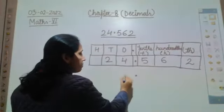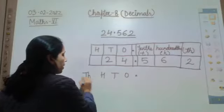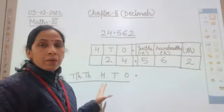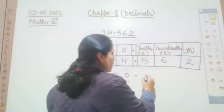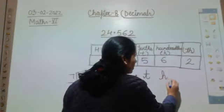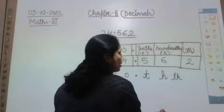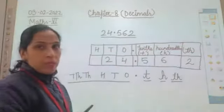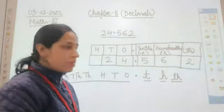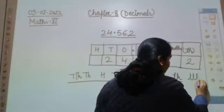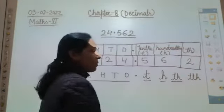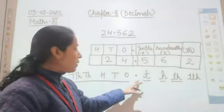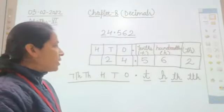Before decimal we have 1, 10, 100, 1000, 10,000 and so on, as we had earlier in the number system. After decimal we have tenths, hundredths, thousandths - all starting with small letters. After decimal, you will not find any ones place. Those places will start with small 't' - tenths only. I hope this place value is clear to you all.